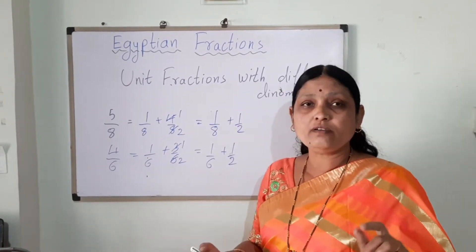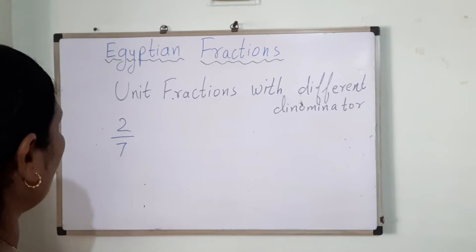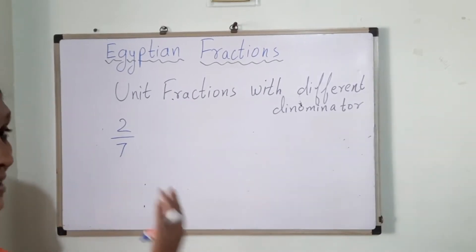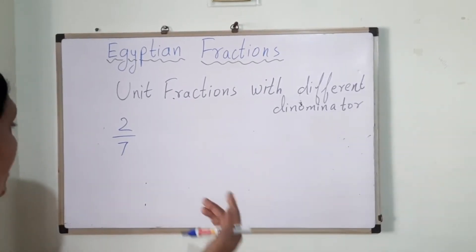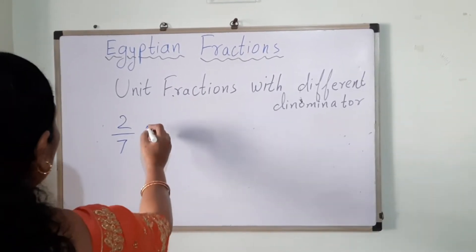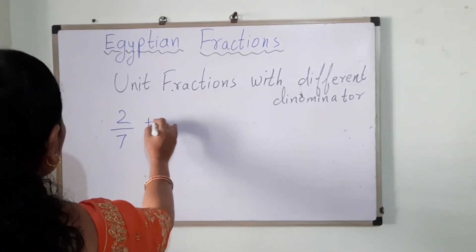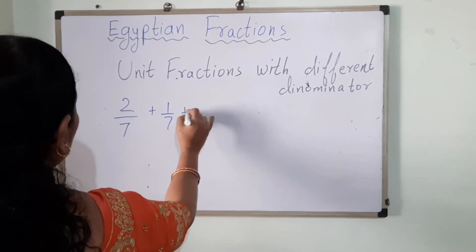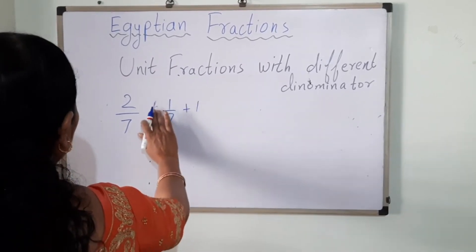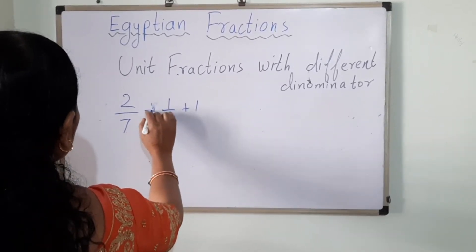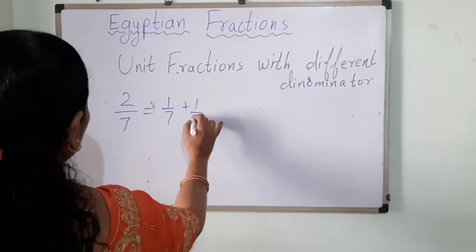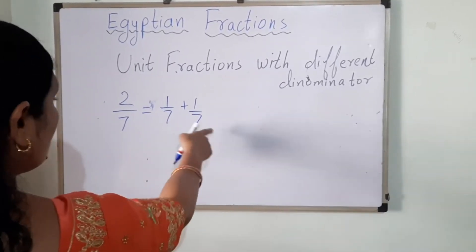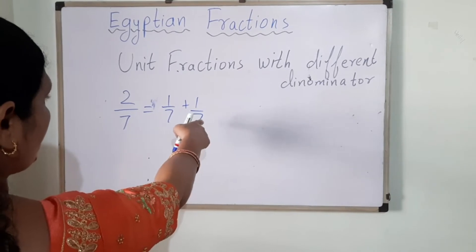Let's take one more example: 2 upon 7. Now 2 upon 7 could be written as 1 upon 7 plus 1 upon 7, but this is NOT an Egyptian fraction because the denominators are the same.